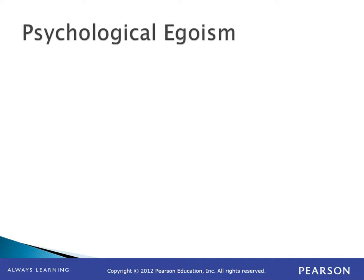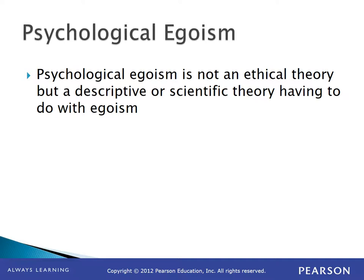We begin by looking at egoethicism, starting with psychological egoism. Psychological egoism is not an ethical theory — it is a descriptive or scientific theory about human ego, a sociological study. Social scientists observe what human beings do and record what they observe. The subjectivism comes in when interpreting the data. Various social scientists have looked at data concerning human egoism and drawn different conclusions.